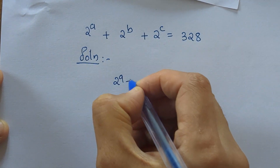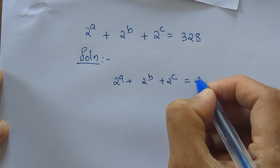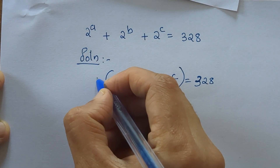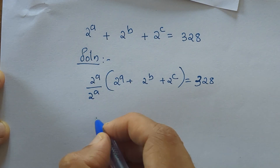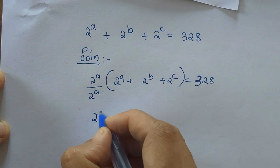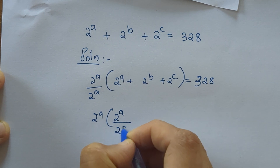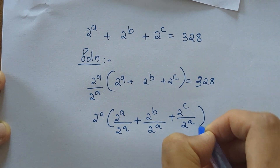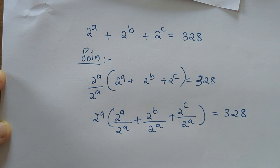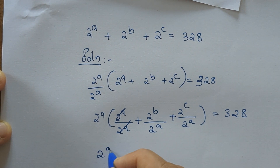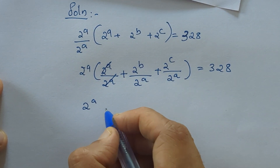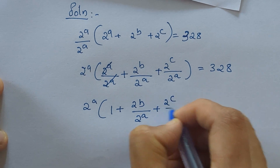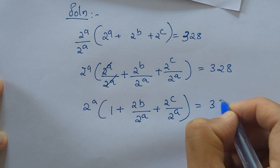So that is 2 raised to A plus 2 raised to B plus 2 raised to C equal to 328. What we can do is multiply by 2 raised to A divided by 2 raised to A, which is equal to 1. So that gives us 2 raised to A into 1 plus 2 raised to B by 2 raised to A plus 2 raised to C divided by 2 raised to A equal to 328.